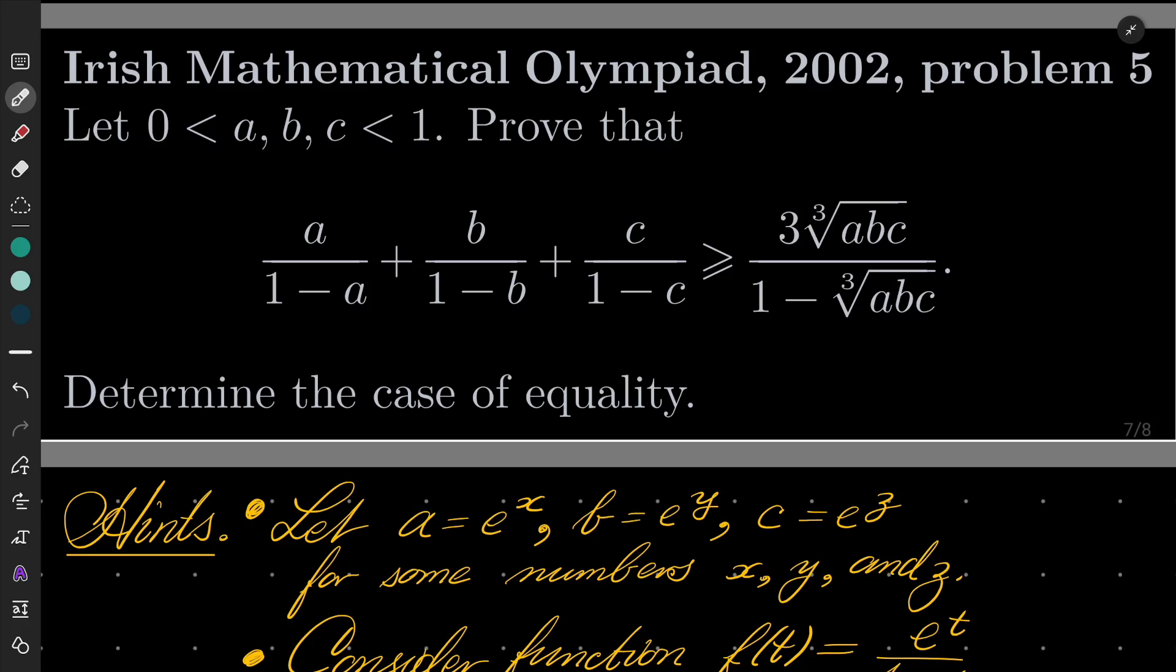Let a, b and c be numbers strictly between 0 and 1. We wish to prove the following inequality: a over 1 minus a plus b over 1 minus b plus c over 1 minus c is greater than or equal 3 times cube root of abc over 1 minus cube root of abc, and moreover discuss when equality happens.